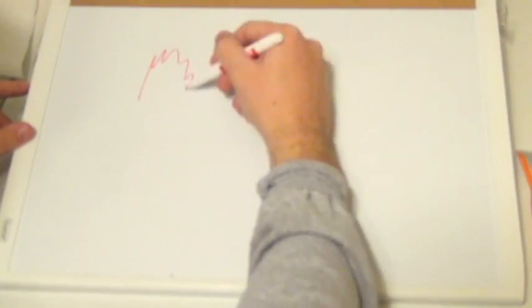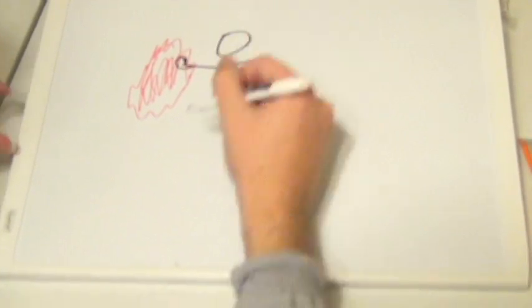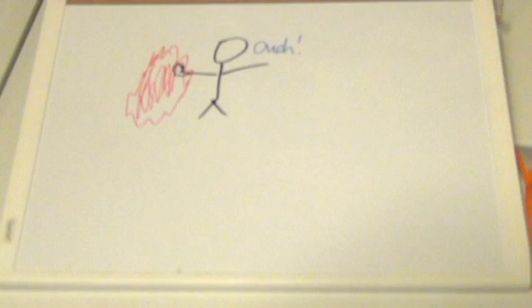For example, when your finger touches something really hot like a fire or getting shocked by electricity, your brain will tell your body to immediately pull your finger away.